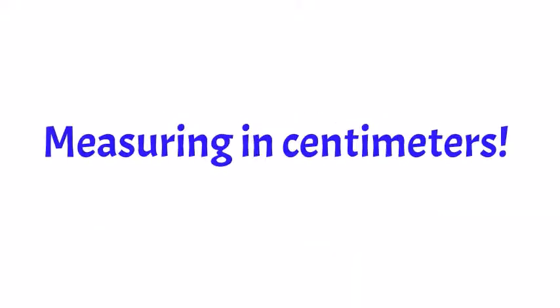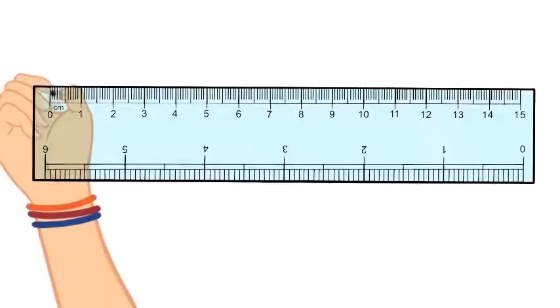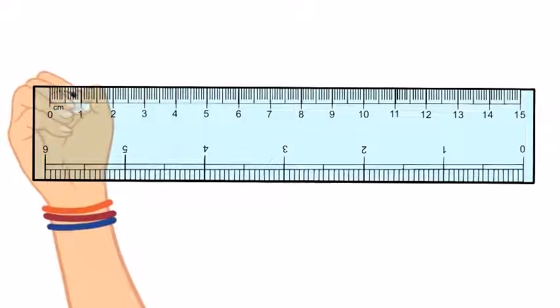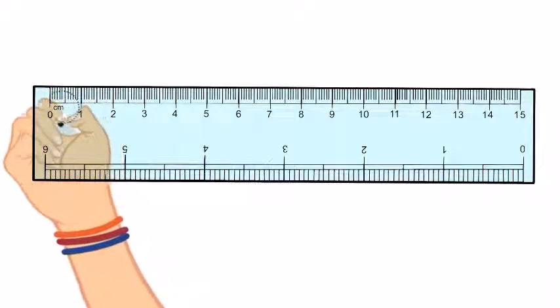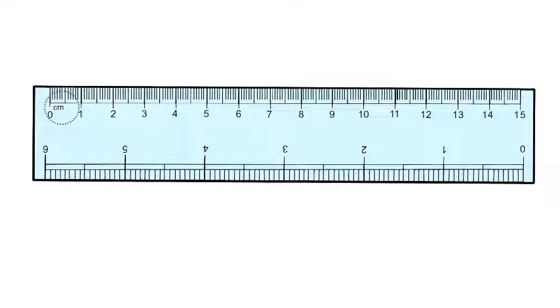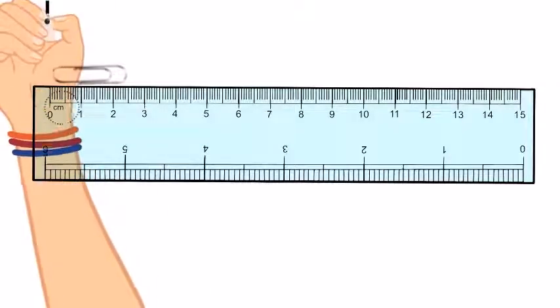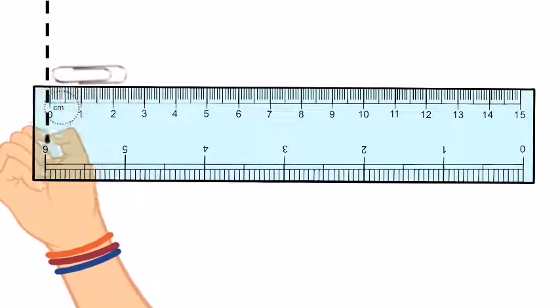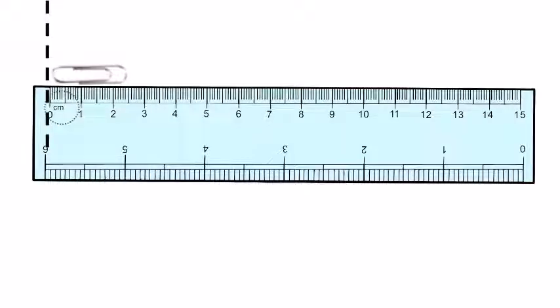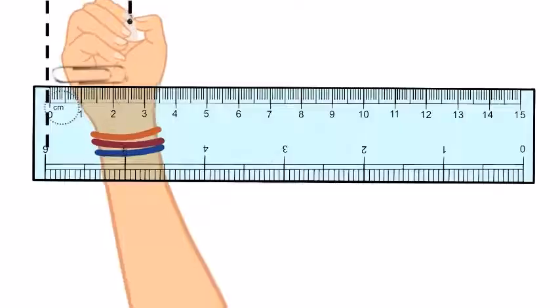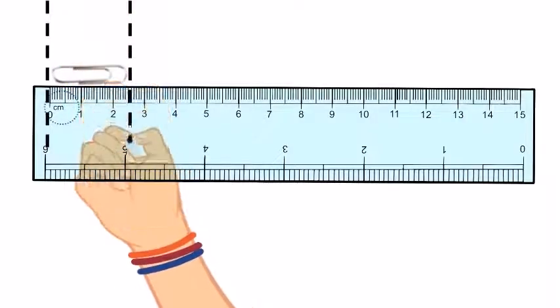Let's first start by measuring in centimeters. When you're measuring centimeters, you're always going to look on your ruler for the CM located right next to the zero line. The zero line is important because you're going to line up your object right there on the zero line and then draw a line down. Now look at where the object ends.